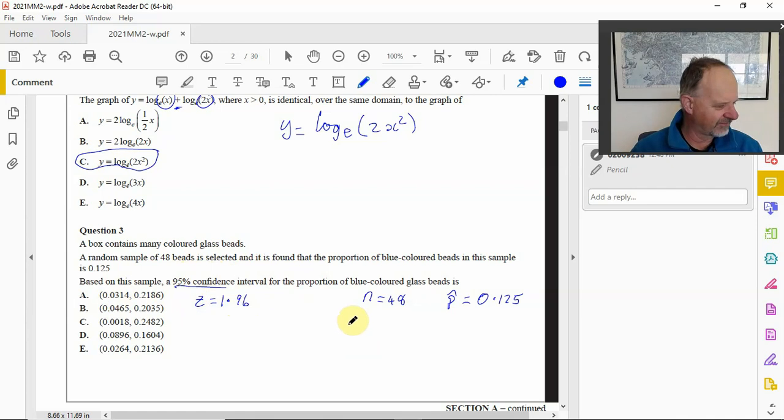Based on this we want to know the confidence interval. So you look up your formula sheet for the confidence interval and the lower edge of the confidence interval would be p-hat minus z times the square root of p-hat times (1 minus p-hat) over n.